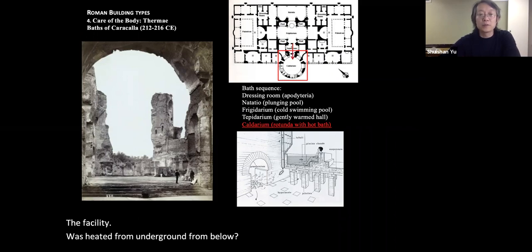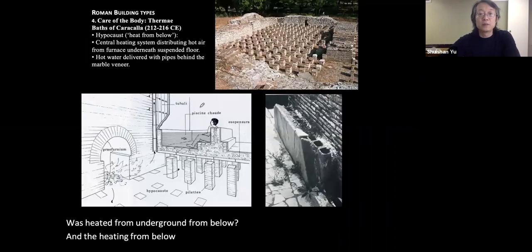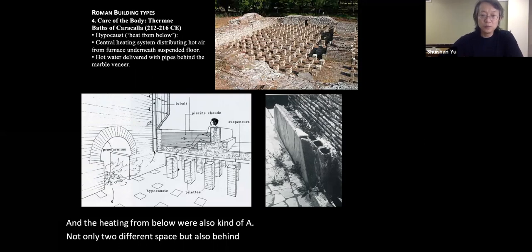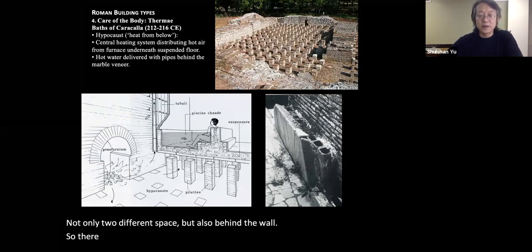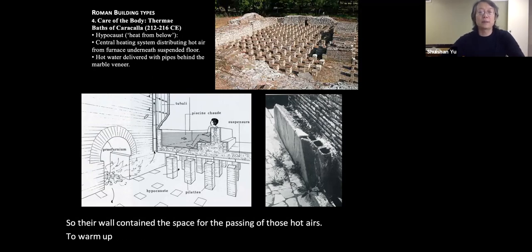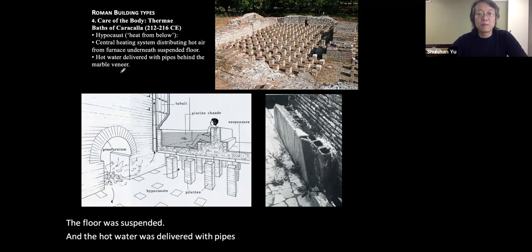The heating from below was tunneled not only to different spaces but also behind the walls. The walls contained space for passing hot air to warm the entire interior. The floor was suspended, and hot water was delivered through pipes behind the marble veneer.